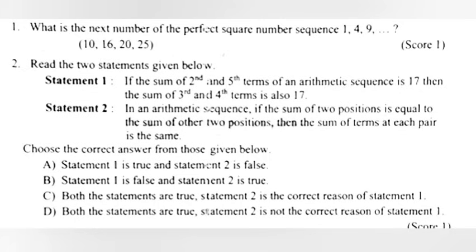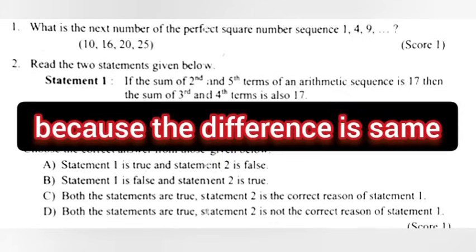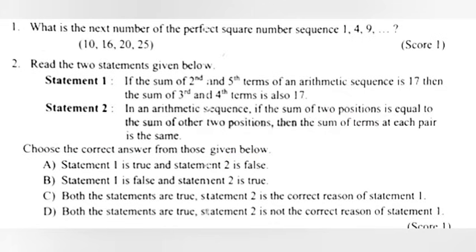Problem 1: What is the next number of the perfect square number sequence 1, 4, 9, etc.? Answer: 16, because the difference is the same. Problem 2: Read the two statements given below and choose the correct answer. Answer: C. Both statements are true. Statement 2 is the correct reason for statement 1.